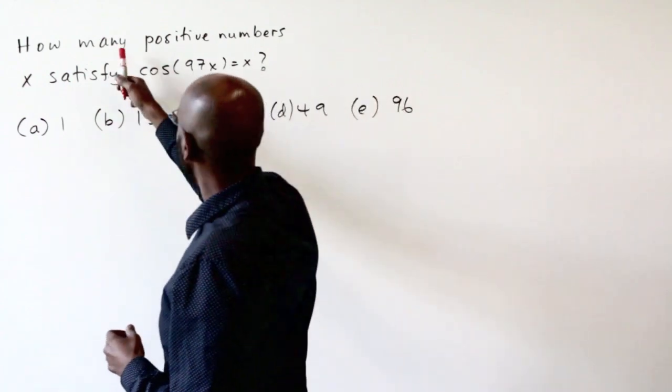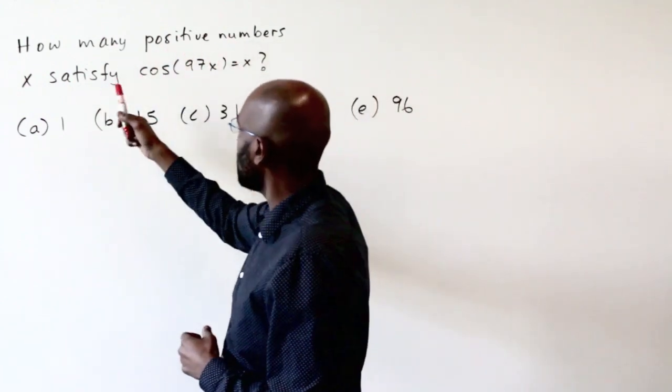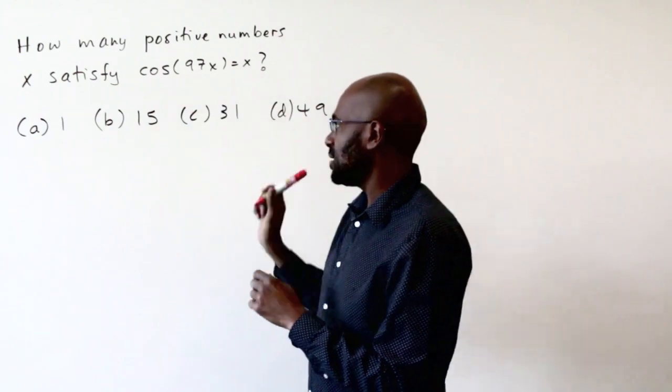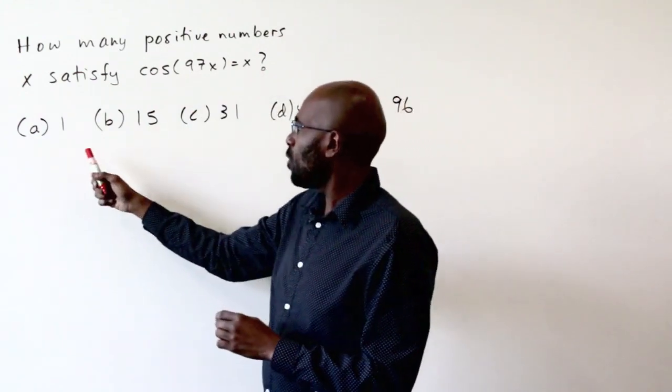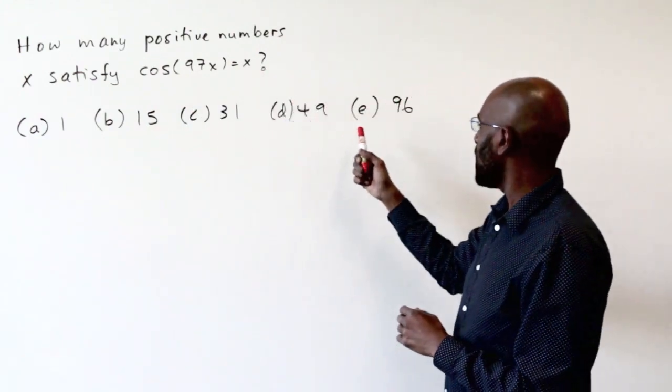The question asked how many positive numbers x satisfy the equation cosine of 97x equals x. And the choices are 1, 15, 31, 49, and 96.